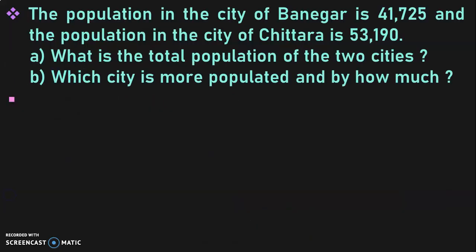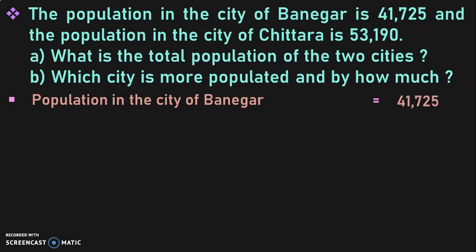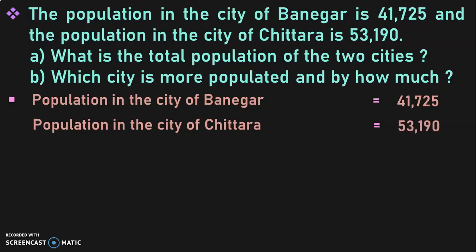The first problem: the population in the city of Banegar is 41,725 and the population in the city of Chittara is 53,190. What is the total population of the two cities, and which city is more populated and by how much? The first step in dealing with a word problem is to write down the given statements. Population of Banegar = 41,725. Population of Chittara = 53,190. To find the total population, we should add the two.